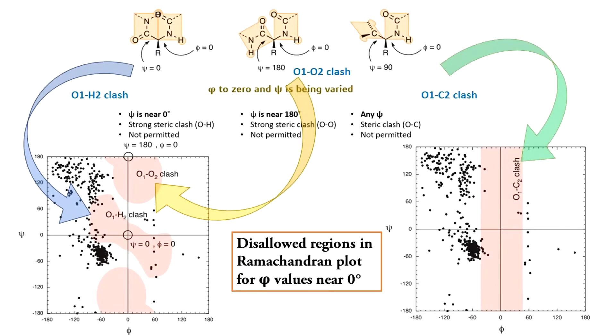So, if these rotations are disallowed, they must rule out some regions from the Ramachandran plot. We have highlighted the unpermitted regions from the Ramachandran plot that are due to these steric clashes. These unpermitted regions are of extreme importance and you must keep them in mind as we progress in our discussion.